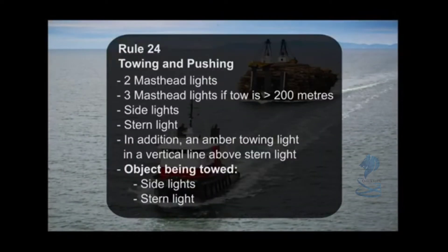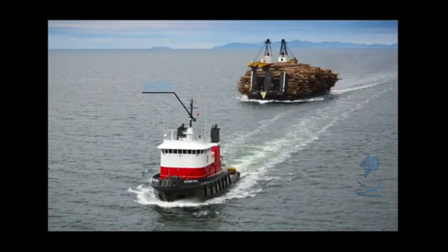Rule 24, Towing and Pushing: two masthead lights — three masthead lights if tow is greater than 200 meters — side lights, stern light. In addition, an amber towing light in a vertical line above the stern light. Object being towed: side lights, stern light. Day shape: if the tow is greater than 200 meters, a diamond shape where it can best be seen.